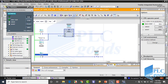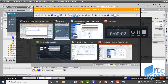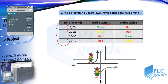Now let's complete my program. To turn on the green light of traffic light A — which I call green A — I need to detect the period of time when the current value of the timer is greater than zero and less than 20 seconds.